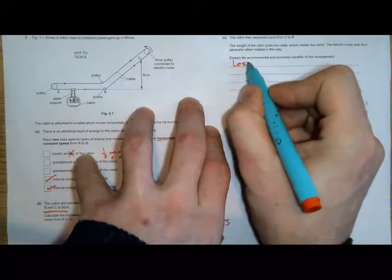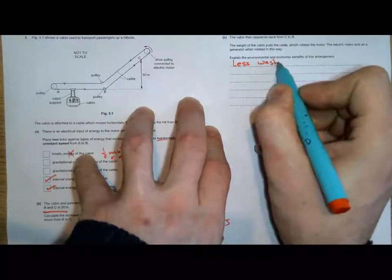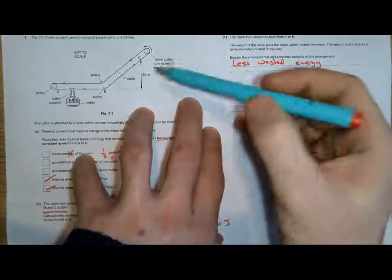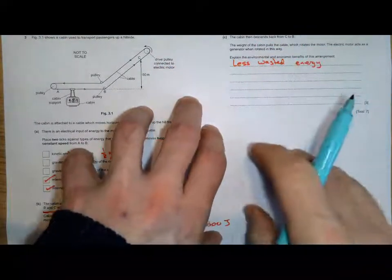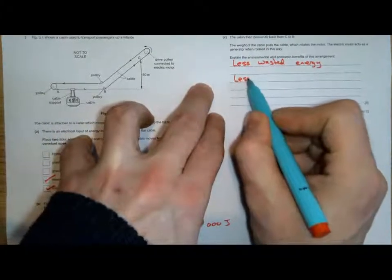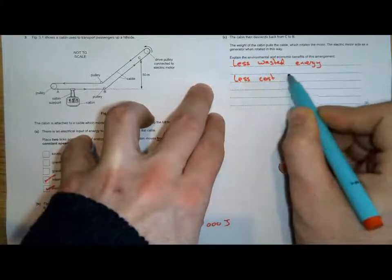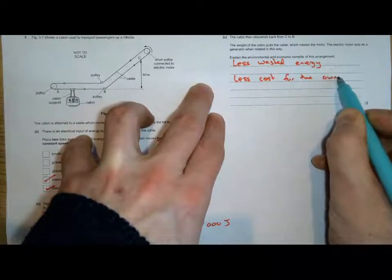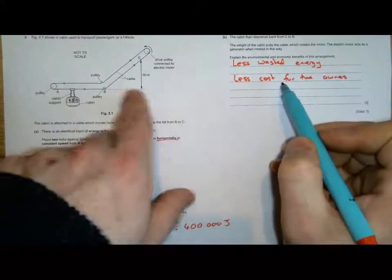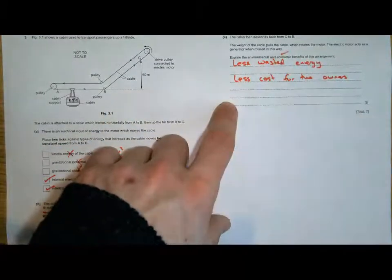Fundamentally, there is less wasted energy because some of the energy from the falling cabin is going back into electricity. This means there is less cost for the owners because we don't need to buy as much energy from the electricity company. So that's our economic benefit.